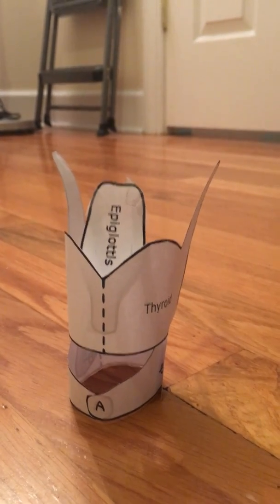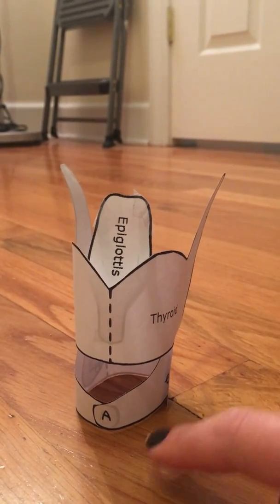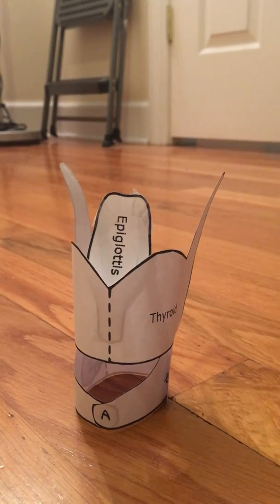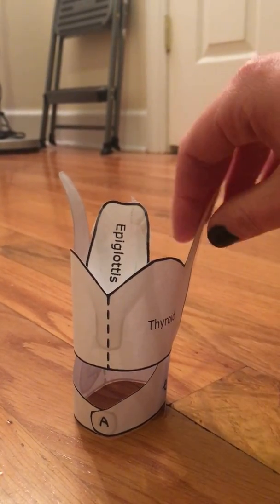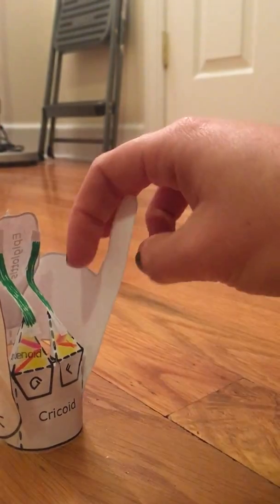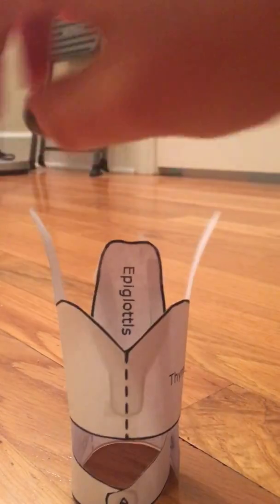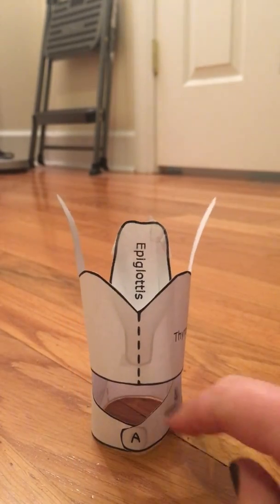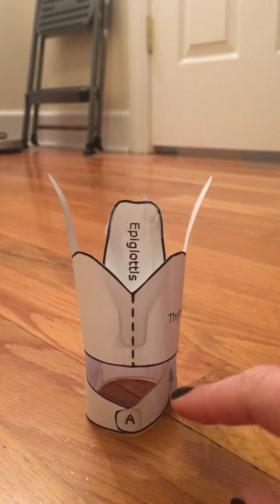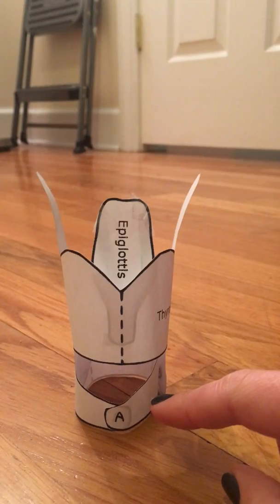Also in the front, we've got the most inferior cartilage, the cricoid. It looks like a signet ring because it's large in the back and skinny in the front. It's another unpaired cartilage along with the thyroid.